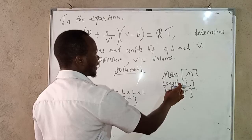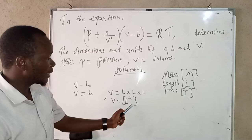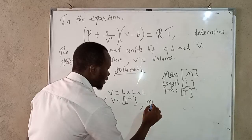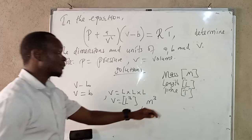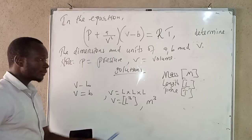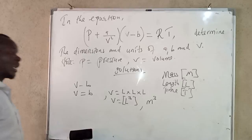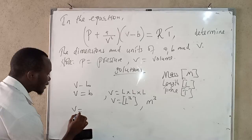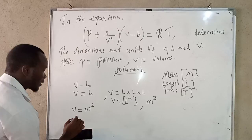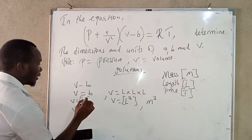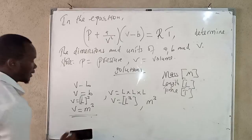L represents length, and the unit for length is meters. So volume in terms of units is cubic meters — m to the power 3, which is meter times meter times meter. Therefore, B has units of m³ and dimensions of L³. That is the answer for B.